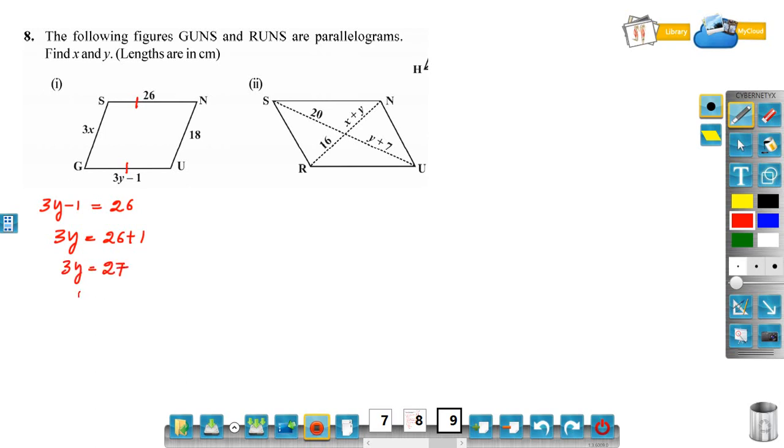Now GS and UN are the opposite sides, so GS is equal to UN. GS is 3x and UN is 18, so 3x is equal to 18.